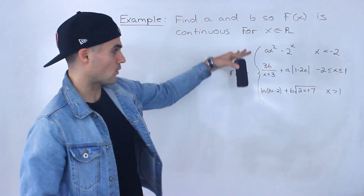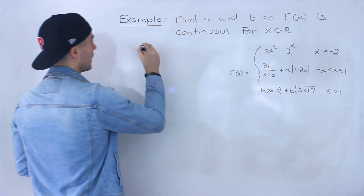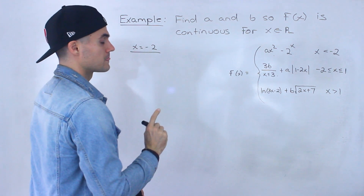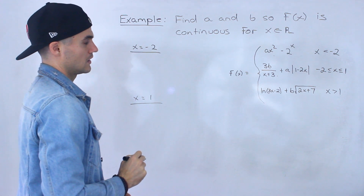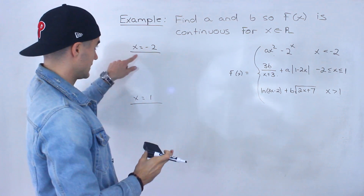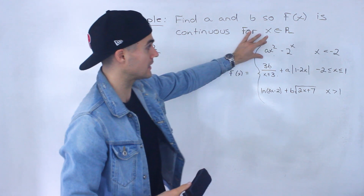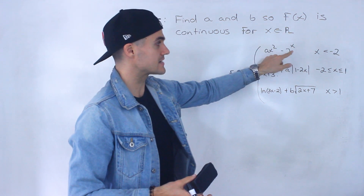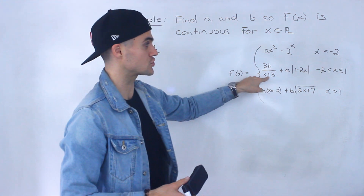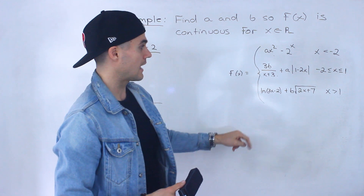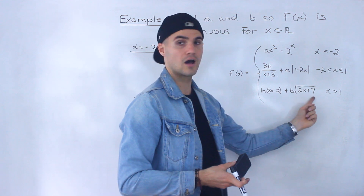For this piecewise function, there are actually two meeting points. This piece and this piece are going to meet at x equals negative 2 — that's one meeting point. And then this piece and this piece are going to meet at x equals 1. So we have to make sure that at x equals negative 2, both pieces have the same y value, meaning the limit approaching negative 2 from the left equals the limit from the right. Similarly, the limit as x approaches 1 from the left has to equal the limit from the right.